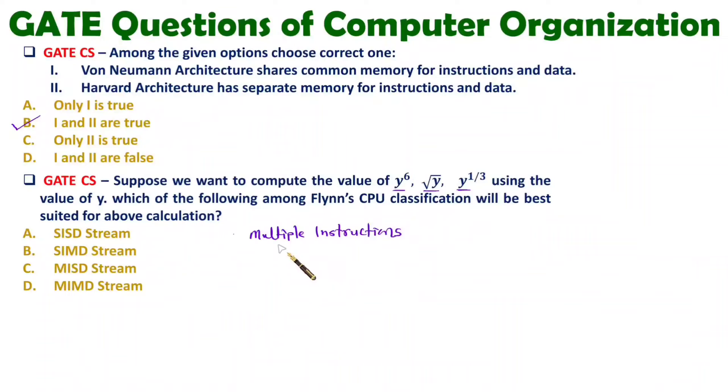So here we are able to perform multiple instructions and if you observe data is one only - y. So you are having single data. For this particular case you should have multiple instruction single data stream type of computation. So you see multiple instruction single data stream option C that will be correct. So that is how we need to understand how you can have Flynn's classification.